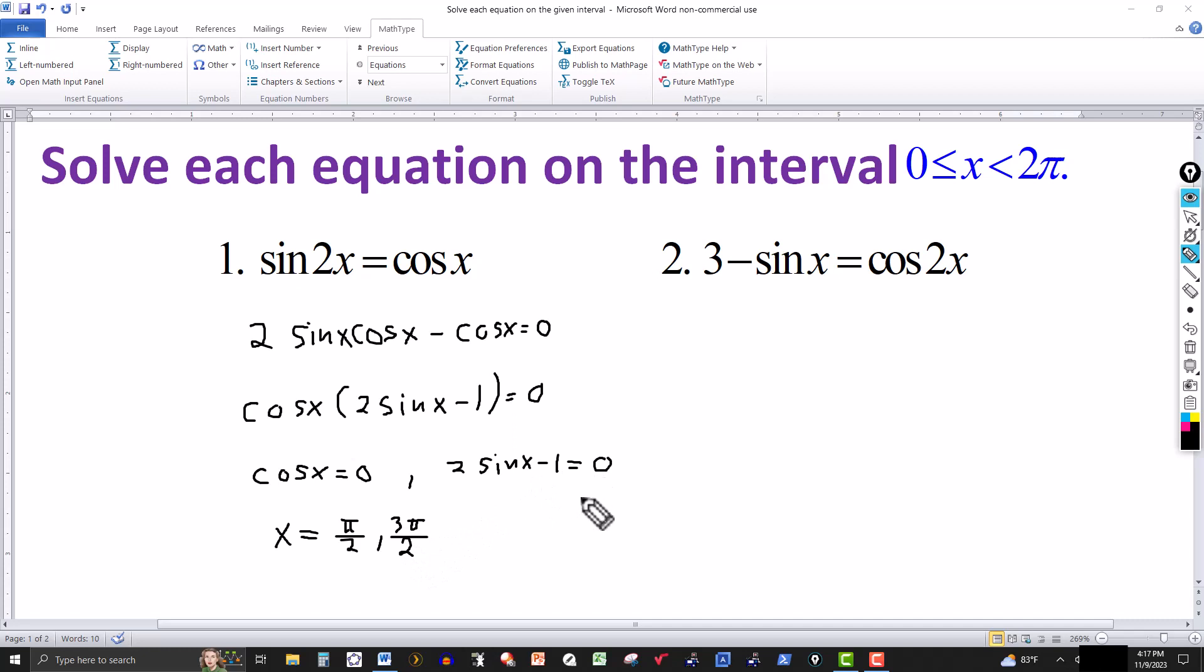For this one, we bring the 1 over, divide by 2, get sin(x) = 1/2. So now we're asking what angle in the interval from 0 to 2π has a value of 1/2. The sine of the angle that has a value of 1/2 is 30 degrees or in radians π/6. And there's another angle, 180 minus 30 or π - π/6. That's 150 degrees or 5π/6.